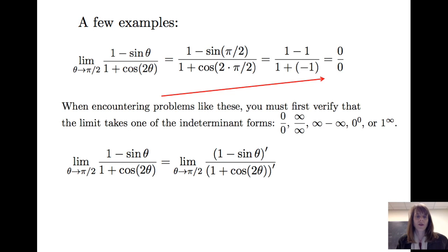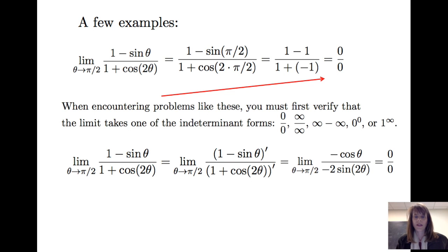The first thing we do is take the derivative of the numerator, divide it by the derivative of the denominator, and then evaluate the limit of that quotient. The derivative of the numerator gives us negative cos θ, and the denominator is negative 2 times sin(2θ). But when we take the limit as θ goes to π/2, we get 0 over 0 again — another indeterminate form.